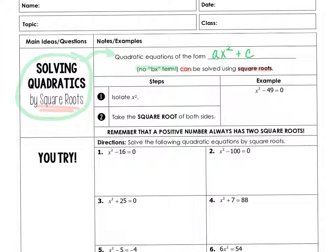So here's the steps. First you want to isolate x². Then you want to take the square root of both sides, and remember that a positive number always has two square roots. The positive root and the negative root.